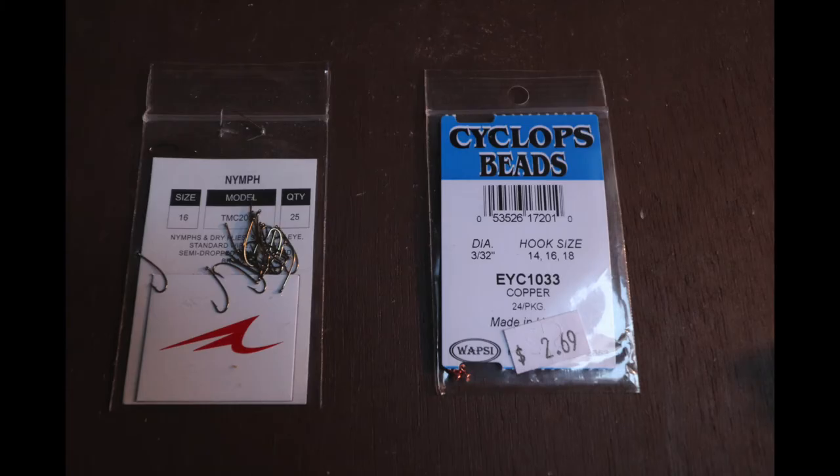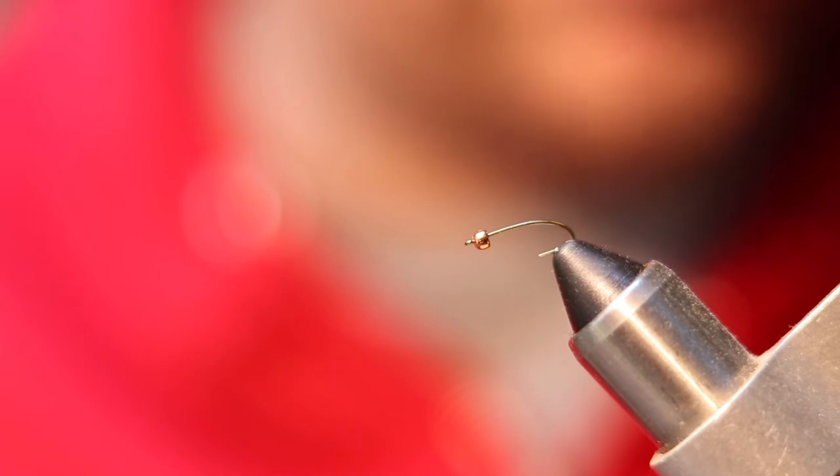Okay, so we're going to get started here. The fly we're gonna tie is a hare's ear nymph. I'm gonna tie it in a size 16, and you can see I already have a size 16 hook in the vise. I do a little different twist in the color that I tie this nymph, and that works well for me on my streams. I tie it in a dark brown with a copper bead and a copper rib, where traditionally you might use a gold bead and gold rib. I live in New Jersey, and the fishing pressure's pretty heavy here. I feel it just gives it something a little bit different that the fish maybe don't see all the time.